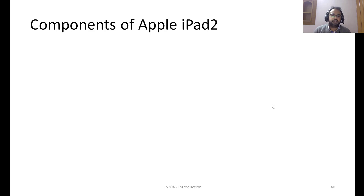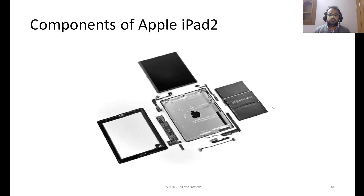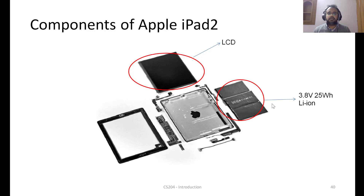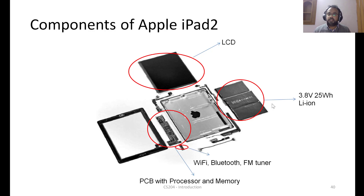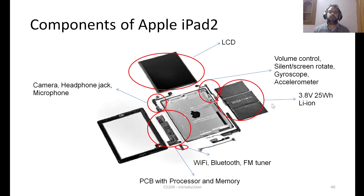As an example, I've picked the Apple iPad 2. These are its overall components. We have an LCD display, a lithium-ion battery, a processor and memory on the PCB (printed circuit board), along with many other modules like Wi-Fi, Bluetooth, FM, camera, headphone jack, and microphone. Additionally, there are volume controls and sensors like the accelerometer and gyroscope, and a rear camera.